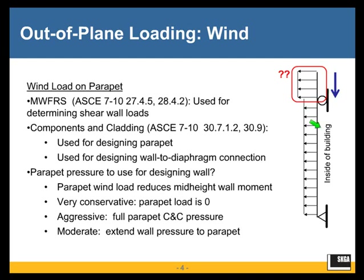So we have an eccentric load at the top, and wind suction is often the critical loading. For seismic loading in the direction shown here, both of these would cause tension on the outside face of the building. If we have wind pressure, it causes tension on the inside, while eccentric loading causes tension on the outside — so they sort of counteract each other. Wind pressure could control if it's higher than the wind suction, depending on the magnitude of the eccentric load.